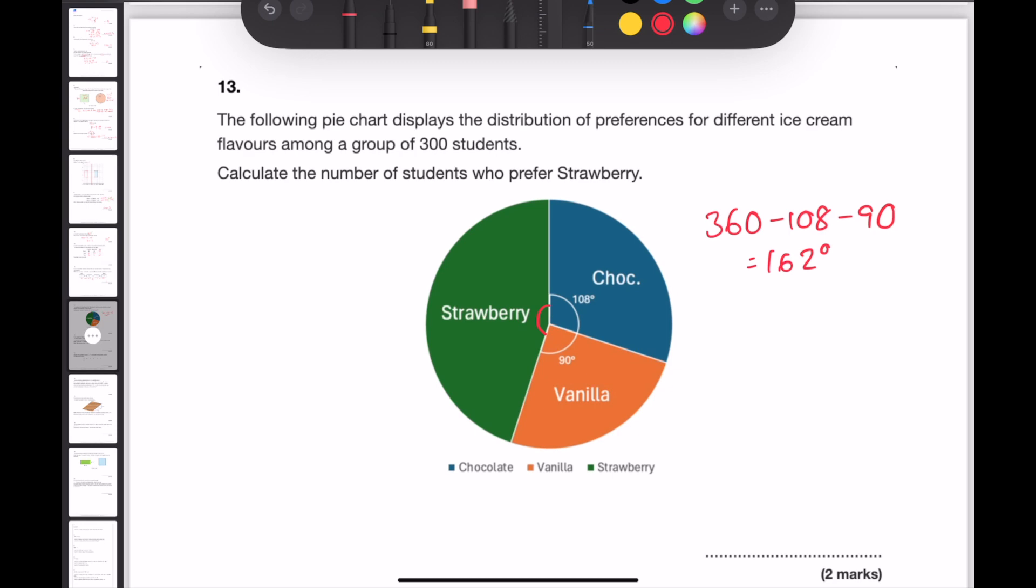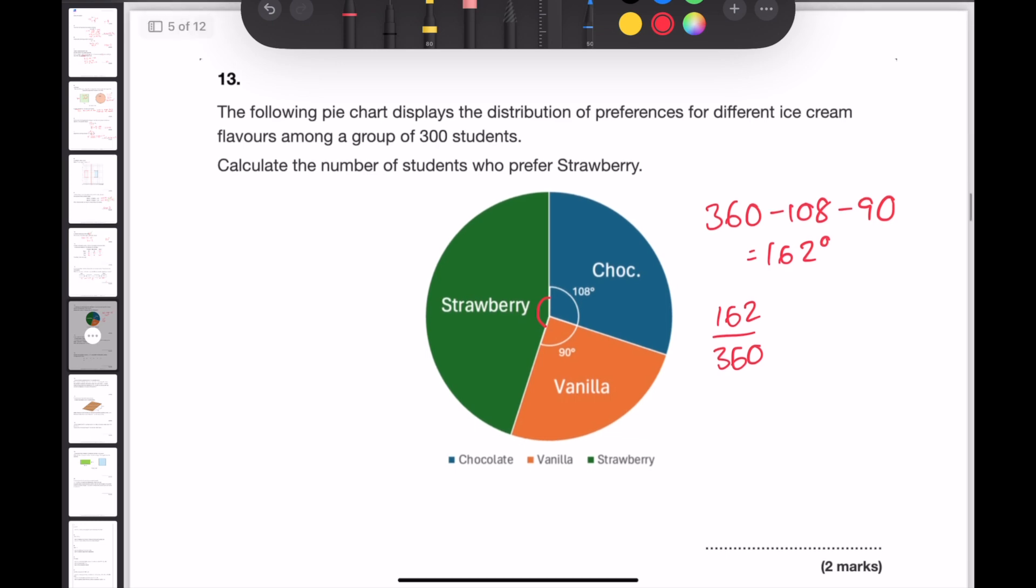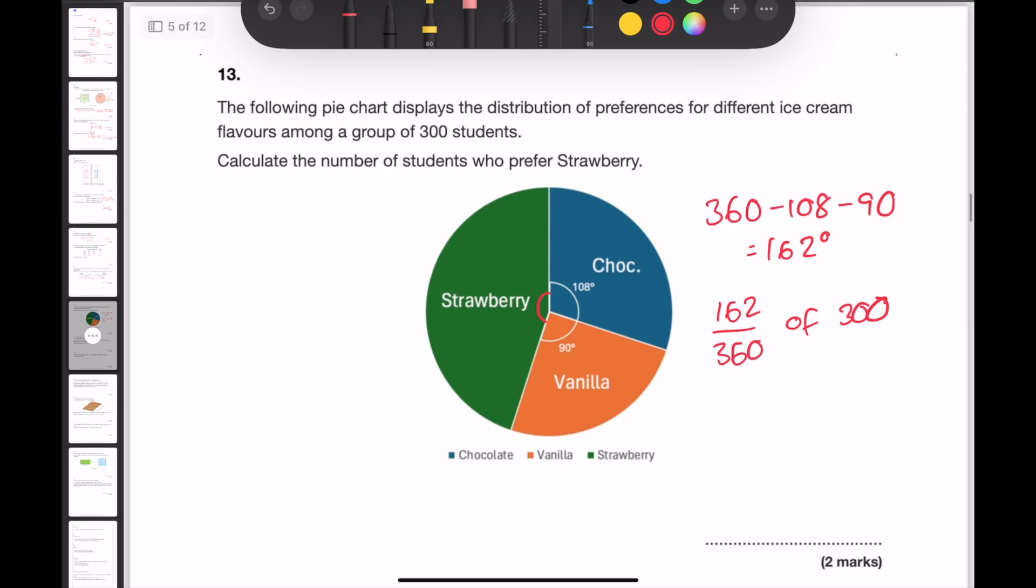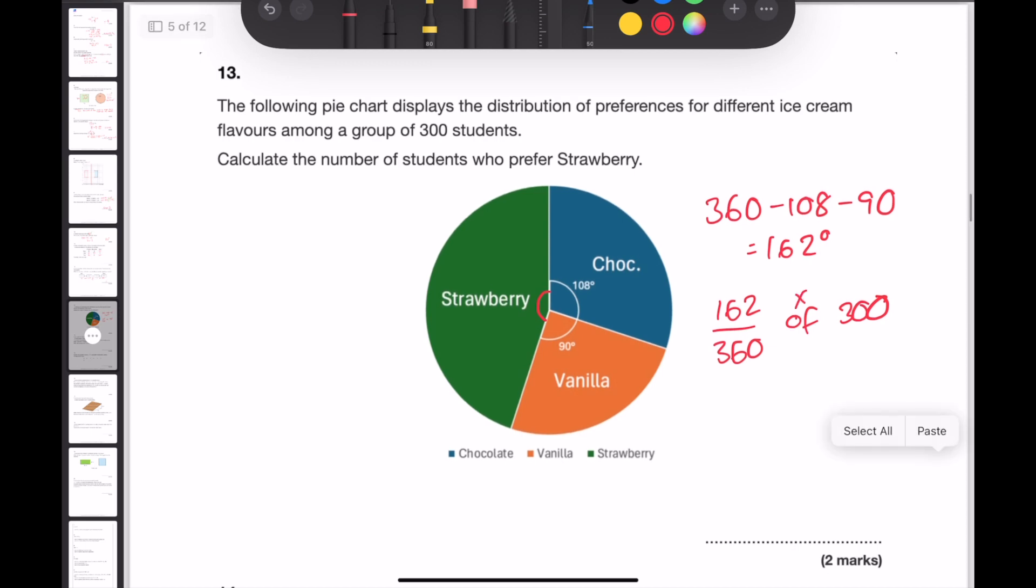Now as a fraction, this can now be written as 162 out of 360 degrees. And if we take the same proportion of 300, we'll then calculate the number of students that liked strawberry. The word of means multiply in maths. So 162 over 360 times by 300 means that 135 students liked strawberry.